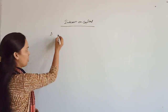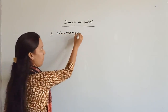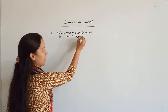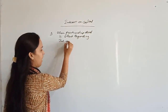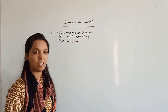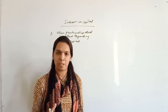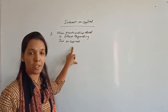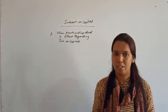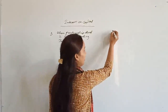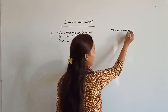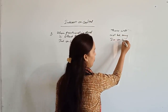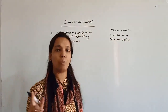The first condition is when the partnership deed is silent regarding interest on capital. As I told you, when partners start a partnership they maintain a partnership deed where all conditions are written. If your partnership deed is silent regarding interest on capital — meaning there is no mention of it — then there will be no interest on capital given to the partners.